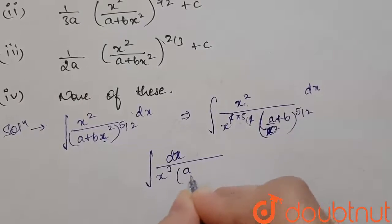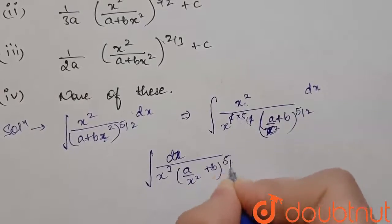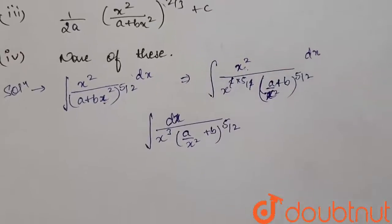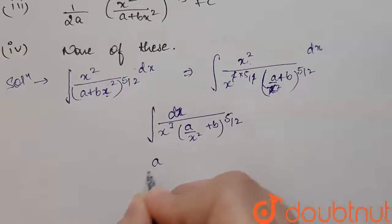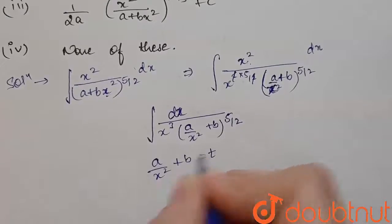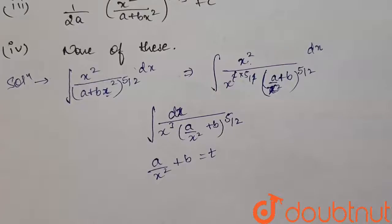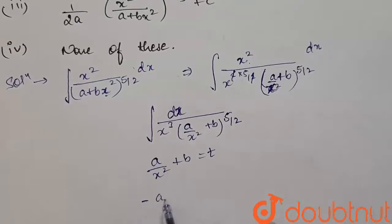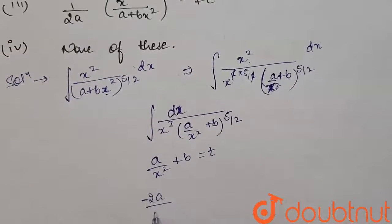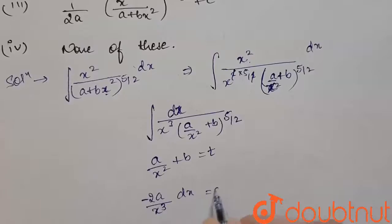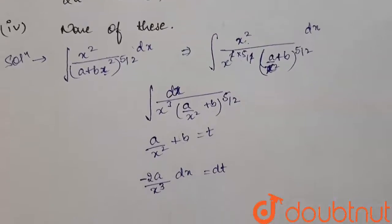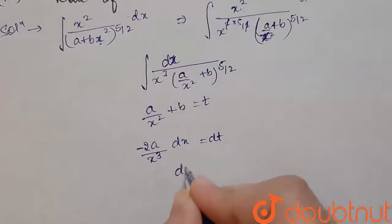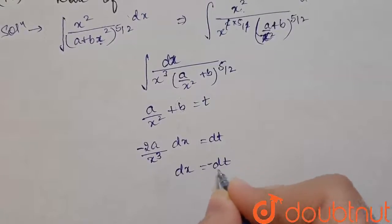Now we use the substitution: let a/x² + b = t. On differentiating, we get minus 2a/x³ · dx = dt. The differentiation of b is zero since b is a constant. From here, the value of dx/x³ is equal to minus dt by 2a.